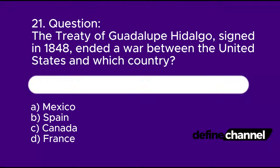Question 21: The Treaty of Guadalupe Hidalgo, signed in 1848, ended a war between the United States and which country? A. Mexico, B. Spain, C. Canada, D. France. Please determine which is the correct answer.